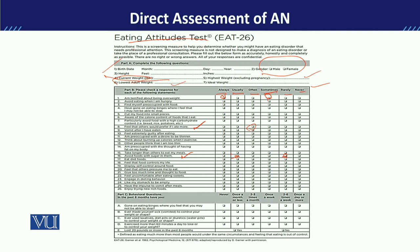Similarly, the client's behavior over the last six months is observed. For example, we will ask: 'Have you ever made yourself sick to control your weight or shape?' — meaning have they vomited or engaged in purging. If they say 'once a month or less,' they mark that option; if they say 'once a day or more,' they mark that option. In this way, whatever their behavior is, they continue to mark it accordingly.